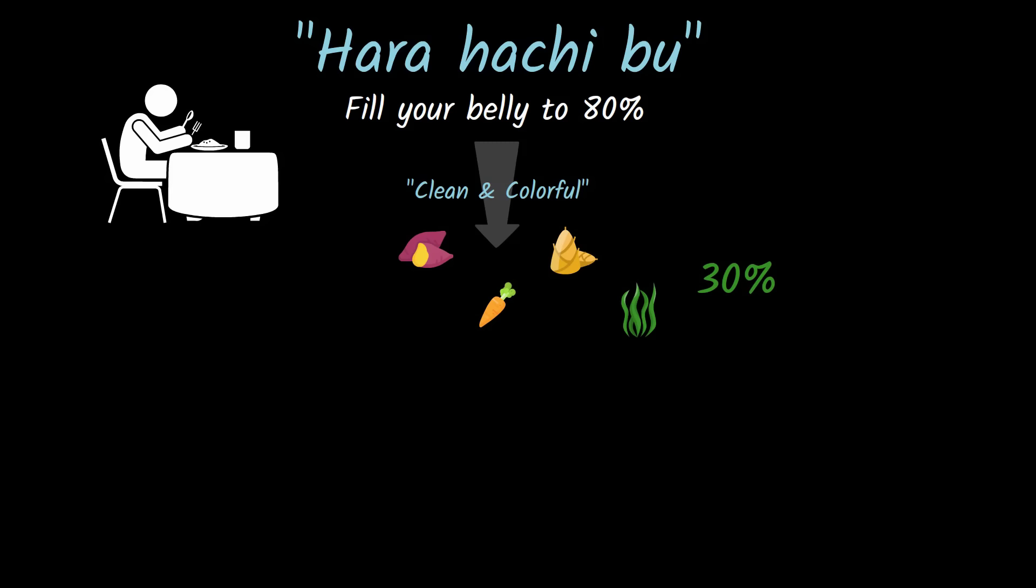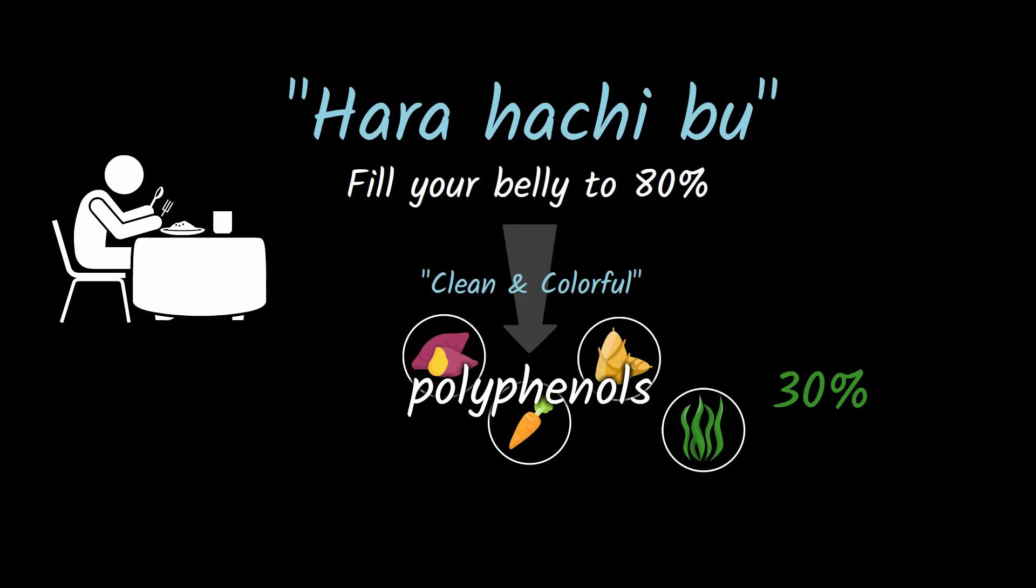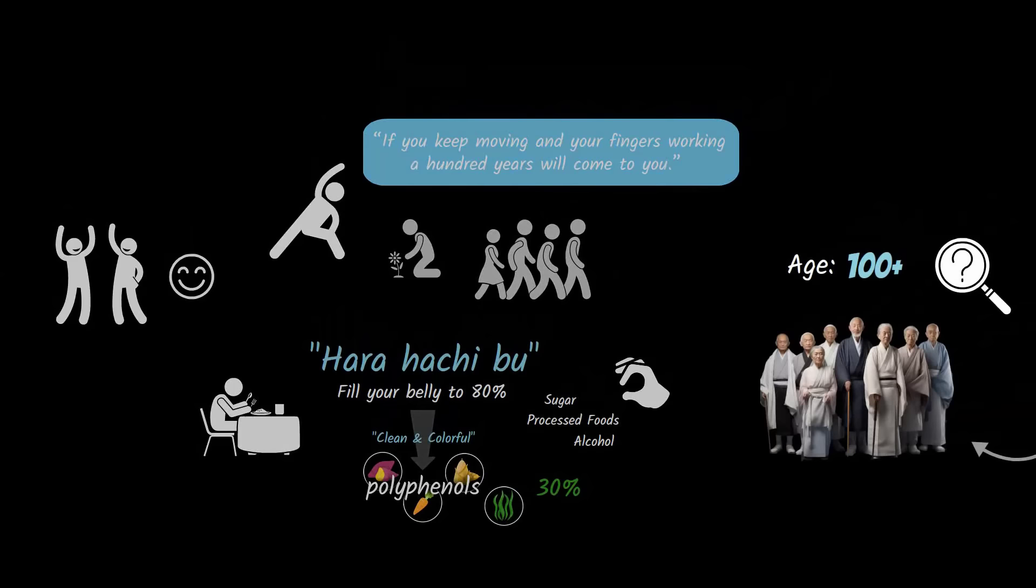These vegetables supplied them with plenty of polyphenols, compounds that reduced inflammation in the body. They also consumed very little sugar, processed foods, or alcohol. How Okinawans ate, moved, and remained optimistic and cheerful all led to a longer life. But the key to their longevity was believed to be their ikigai, a strong guiding sense of purpose.